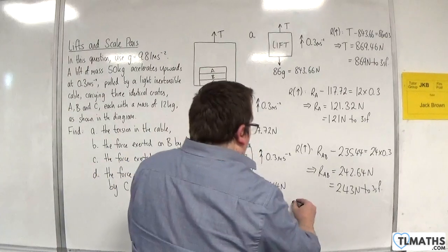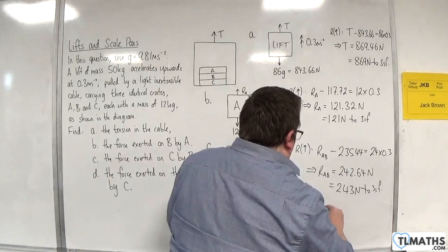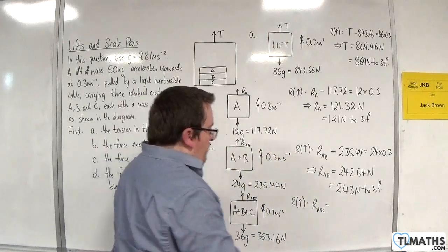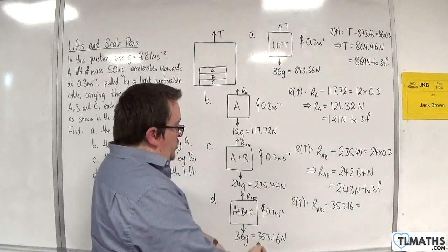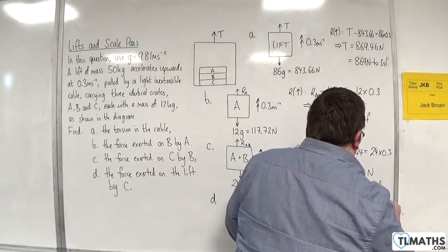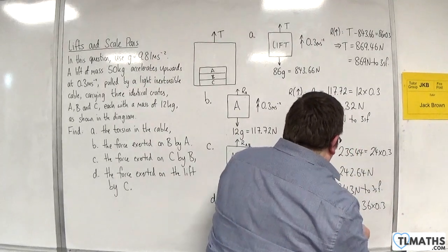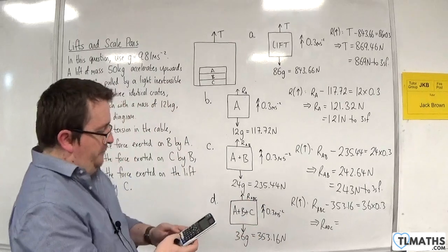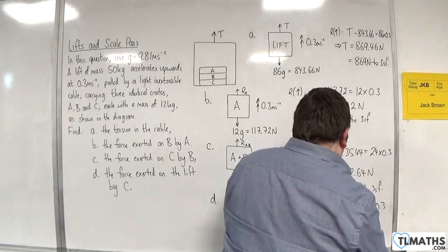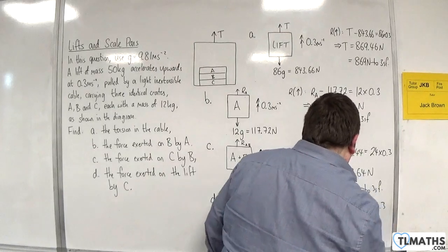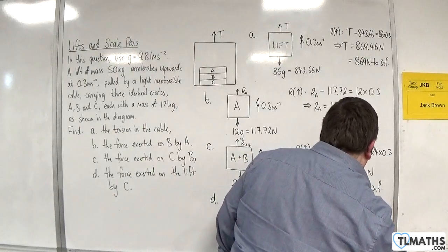So if we resolve upwards, then I've got the normal reaction force ABC take away 353.16. So the normal reaction force ABC is equal to 363.96 newtons, which is equal to 364 newtons to 3 sig fig.